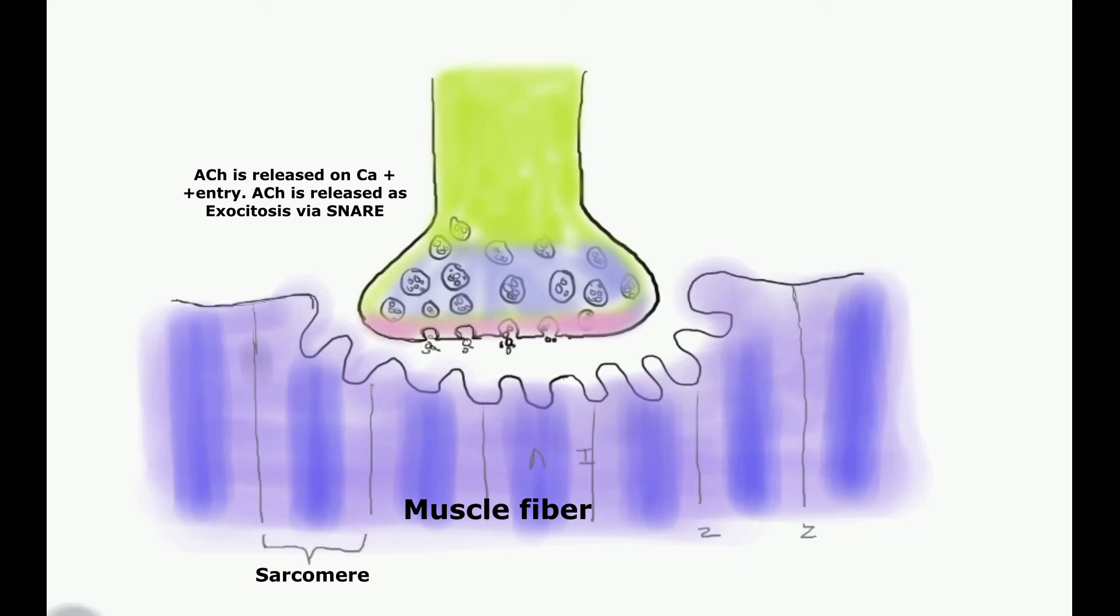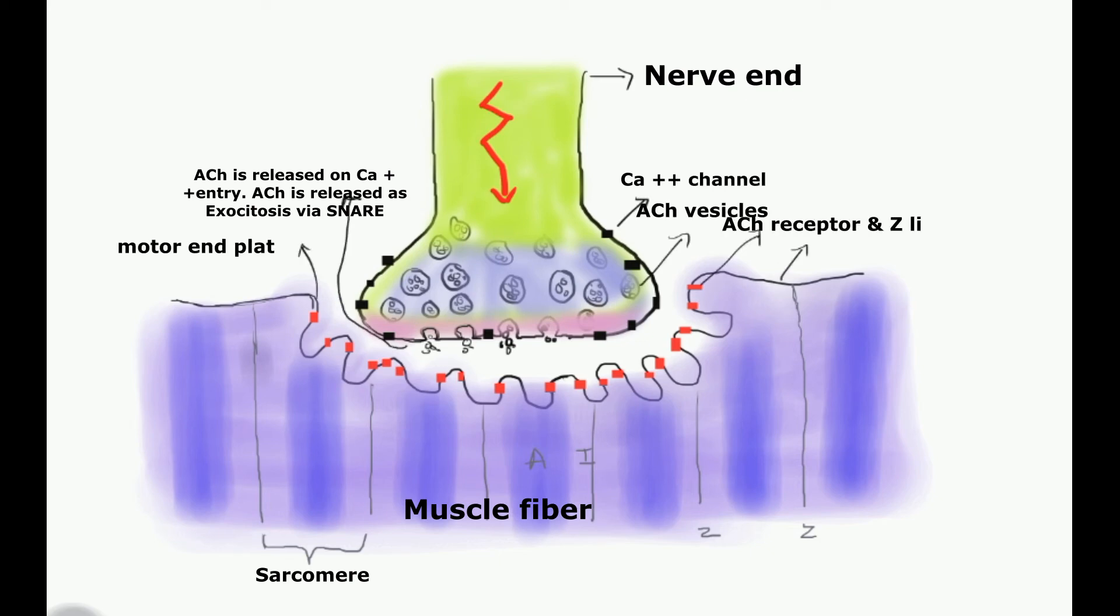Upon the arrival of the action potential, the calcium voltage channels trigger the influx of calcium inside the terminal button, which subsequently releases the acetylcholine via exocytosis via SNARE protein.